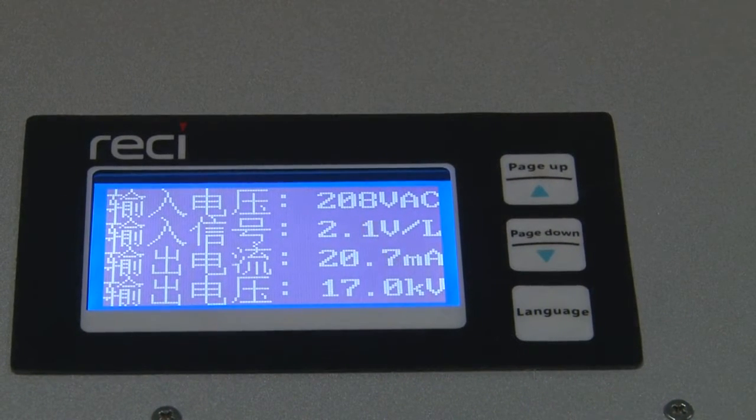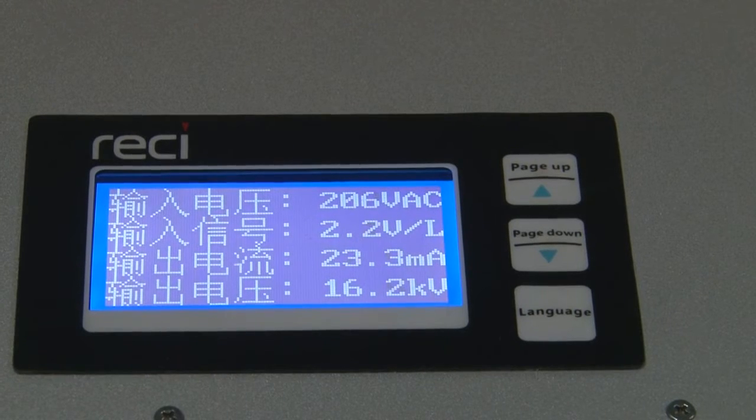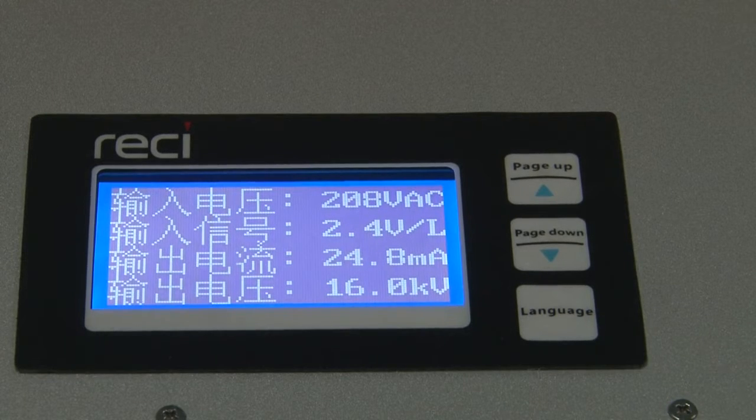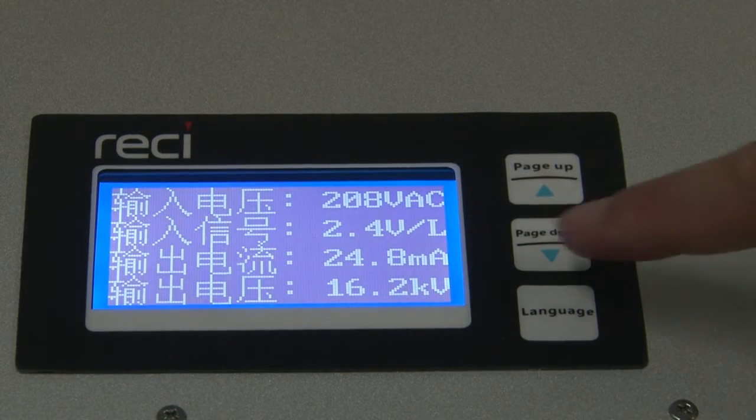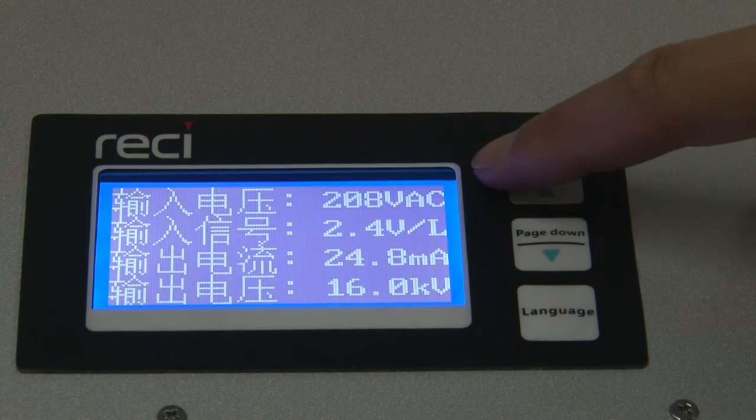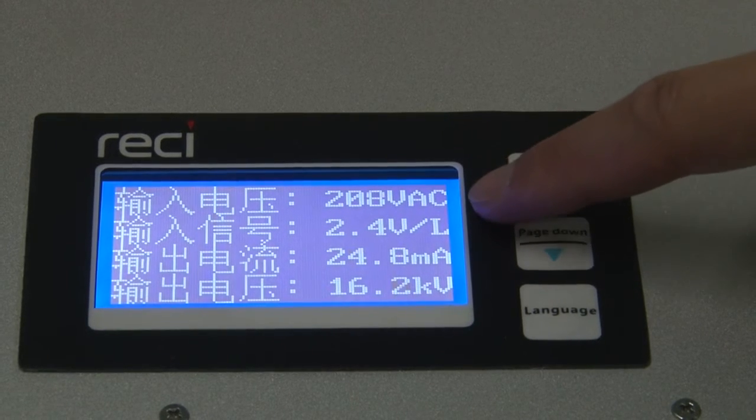In the meanwhile, real-time operating parameters of the power supply can be shown when the laser tube is in operation, such as input voltage, output current, output voltage, as well as work environment parameters, including temperature and humidity.